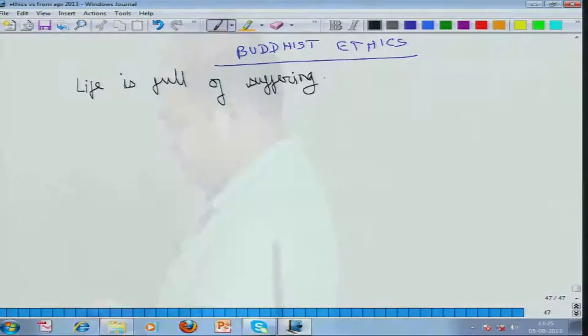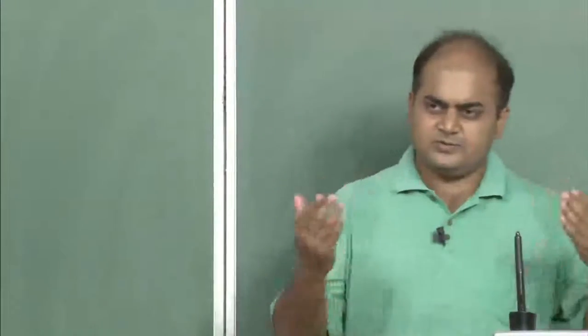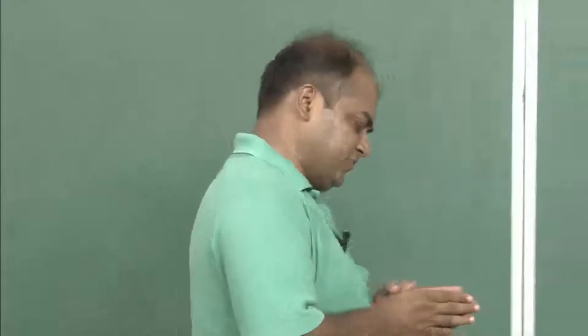Now this young Prince Siddharth, as he was known then, saw these sights of old age, disease, sickness and birth and death. And then he thought that well, why is there so much of suffering. What he could see all around was a lot of suffering. That people were suffering, that even happiness and joy that we see is only intermediary between sufferings. That made Prince Siddharth go out in search of what is it that can give one escape from suffering.